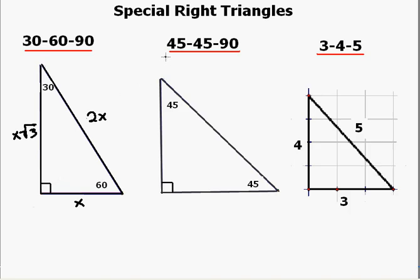Moving to the 45-45-90 degree triangle, notice that this is an isosceles. This length and this length are the same. The converse of the isosceles triangle theorem states that if two angles in a triangle are equal, their opposite sides are equal. Therefore, if one leg has a length of x, the other leg also has a length of x, and the hypotenuse has a length of x times the square root of 2.